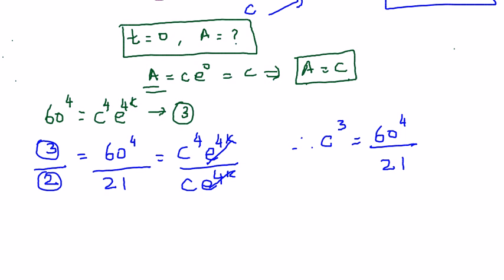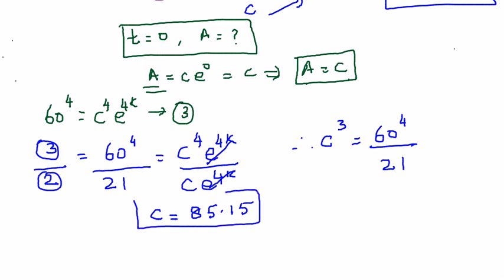To find the cube root of 60⁴/21, you can use a calculator, but in exams you must use logarithmic tables — or the question may provide the value directly. Using the logarithmic method, the value of C comes out to 85.15. Practice using the log method at home so you become familiar with it.